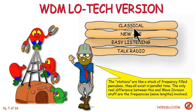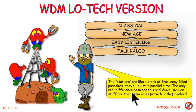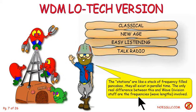Basically these are like a stack of pancakes — a stack of frequency-filled pancakes. They all exist at the same time. They're around us right now even as I speak to you. So the only real difference between this and wave division multiplexing is the frequencies. In wave division fiber optic systems, they talk wavelengths and stop talking frequencies.